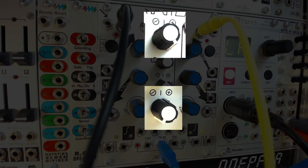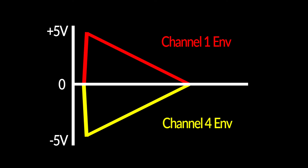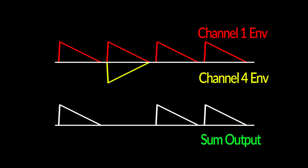By routing the Maths channel 1 and 4 attenuverters to opposite polarities — channel 1 positive, channel 4 negative — when the envelopes are triggered at the same time, Maths uses the sum output to add the two signals together. If the envelope shapes are the same, they should cancel each other out completely, resulting in an unopened VCA for that step.